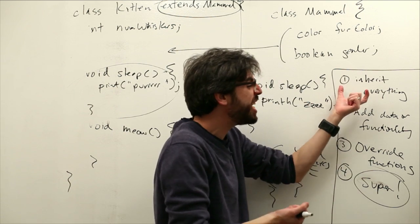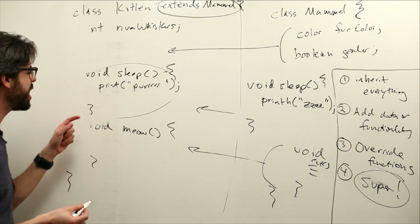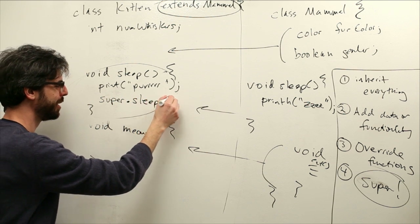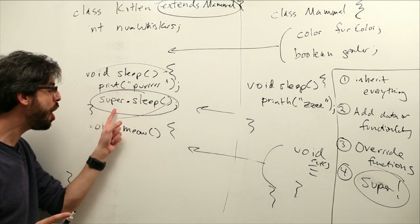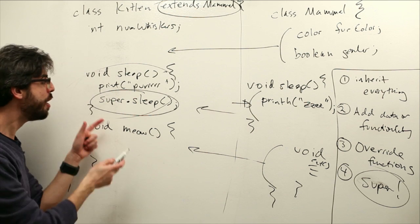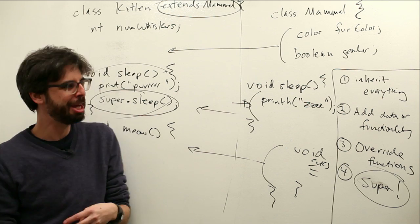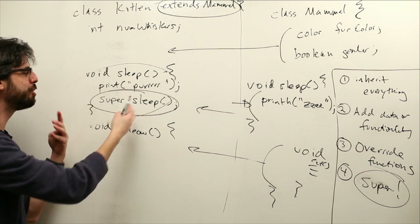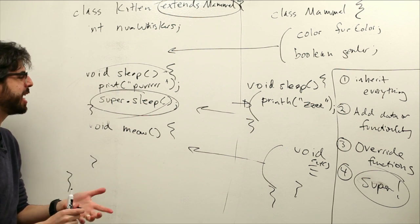But if we want, we could both inherit and override. We could sort of inherit the function but add something to it. And the way that we do that is by saying super dot sleep. So what super dot sleep does is it allows you to call the functionality that's in the super class, the parent class. So now for a kitten to sleep, a kitten goes purr, zzzz, purr, zzzz. So without super dot sleep, it's just purr. Without putting this in at all, it's just we inherit this zzzz. Now we can do both. If we wanted to, we can always call the parent sleep function as well by using the keyword super.